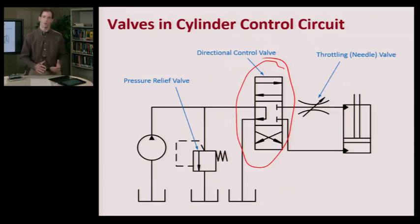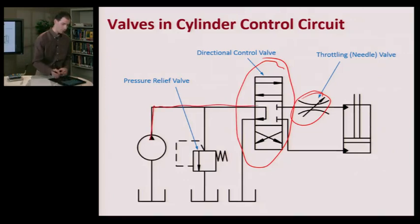When we started to control the velocity of the hydraulic cylinder, that's when we used this throttling or needle valve right here. The purpose of this was to restrict the flow. What was happening is we were building up pressure upstream of this valve, from the outlet of the pump through the directional control valve to the inlet of this pressure relief valve.